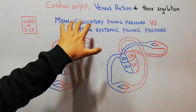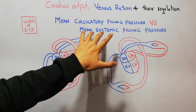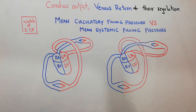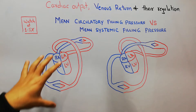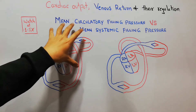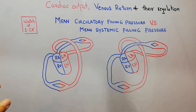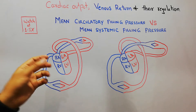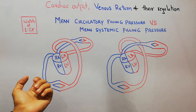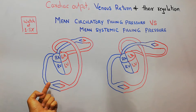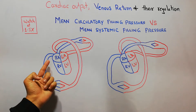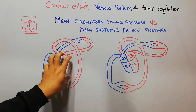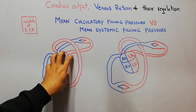Today we are going to discuss mean circulatory filling pressure and mean systemic filling pressure, and the difference between the two. Mean circulatory filling pressure is the pressure in the blood vessels — the filling pressure which drives blood towards the heart — and it is measured when the pumping of the heart is stopped.